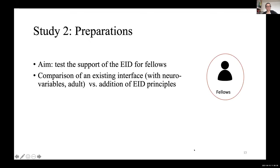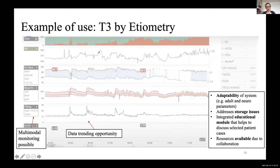We hope to come up with design ideas and test them in the second study: testing a specific ecological interface support for fellow physicians only, comparing two groups — one using an existing interface with neural variables and adult patients, and another using the ecological interface we designed. One example of an existing interface already has great elements: it's very adaptable, clinicians can customize variables and display them over a wide time span with zoom in and out to help trend the patient's situation.